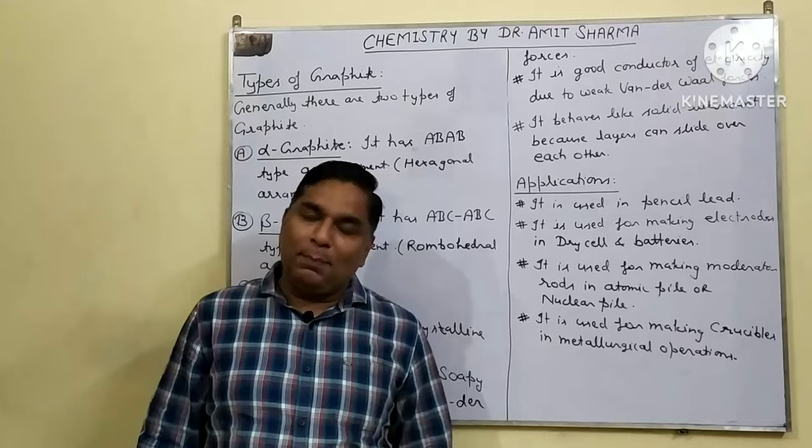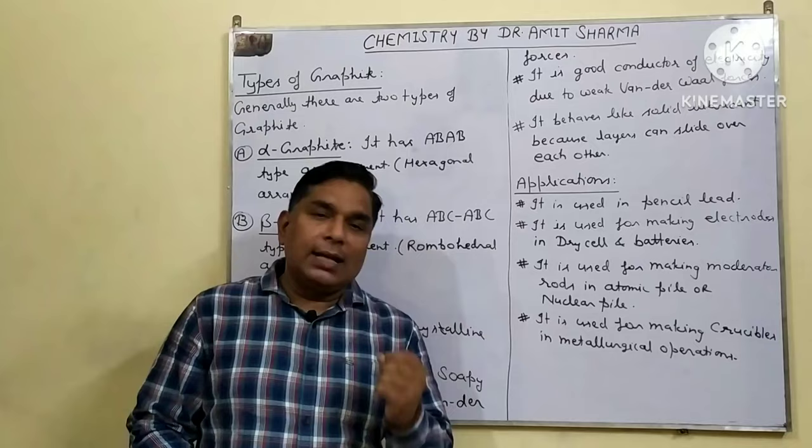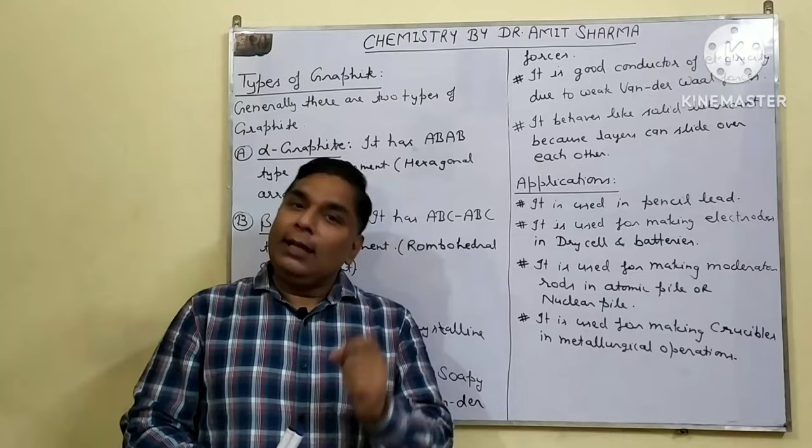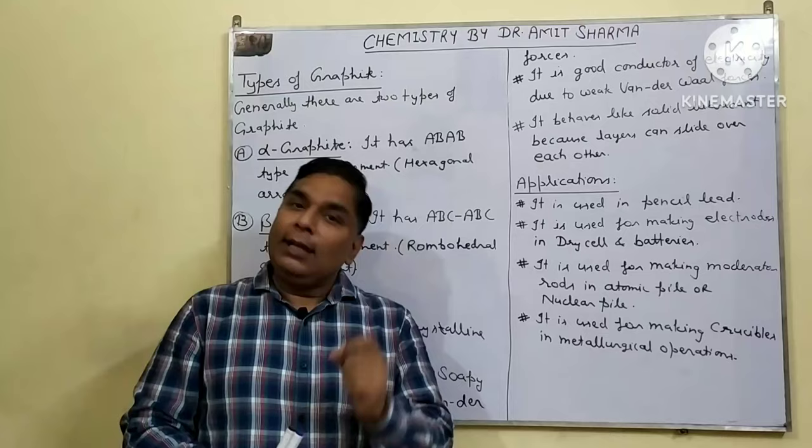So in this way, we have covered a short note on graphite including its structure, properties, and applications. Preparation is not included here — it comes in the full lesson. The types covered are alpha and beta graphite.